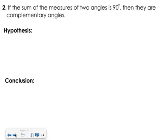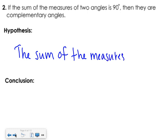So what about this one? If the sum of the measures of two angles is 90 degrees, then they are complementary. What is our hypothesis? The sum of the measures of two angles is 90 degrees. Yep. Which makes our conclusion they are complementary.